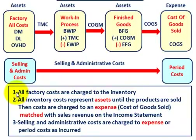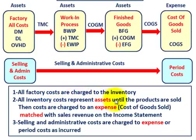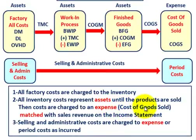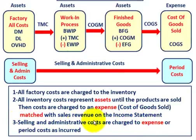There are three key points for cost flow in absorption costing. First, all factory costs — labor, material, and all overhead — are charged to inventory. Second, all inventory costs represent assets until the products are sold, at which point the costs are charged to expense as cost of goods sold. Those expenses are then matched with sales revenue on the income statement. Third, selling and administrative costs are charged to expense as period costs as they are incurred.